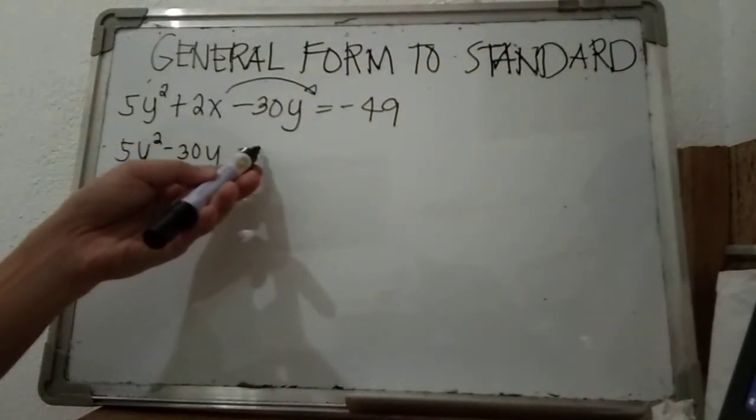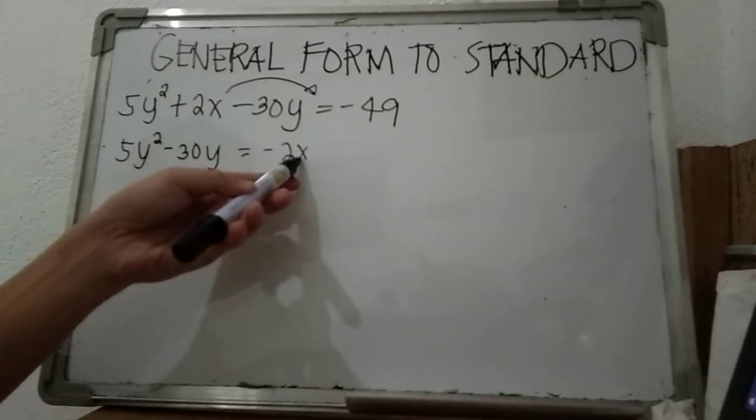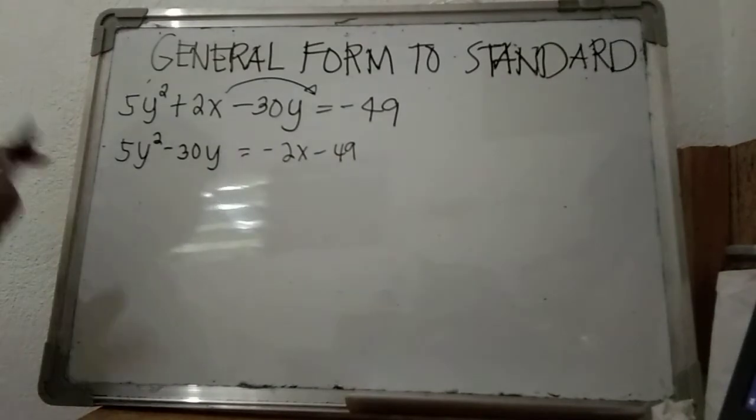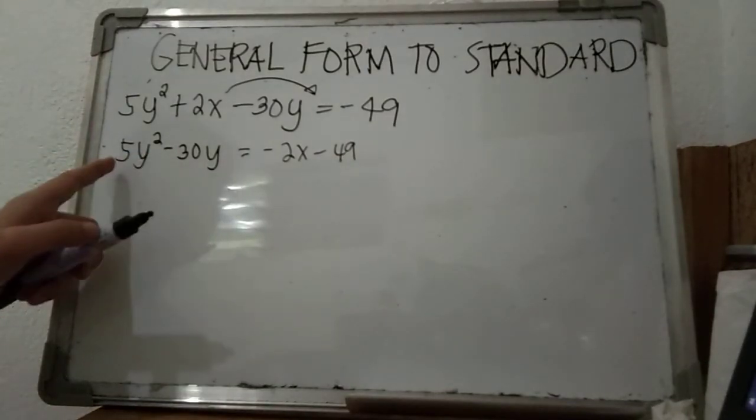This is now negative 2x minus 49. On the left side we are going to factor out the common. What's the common of 5 and negative 30?